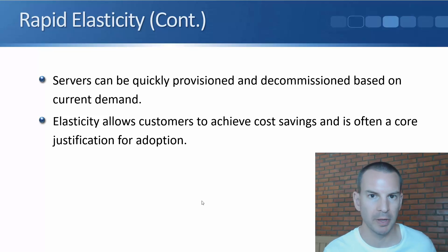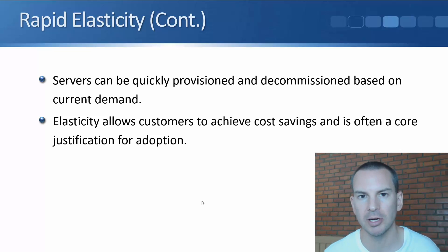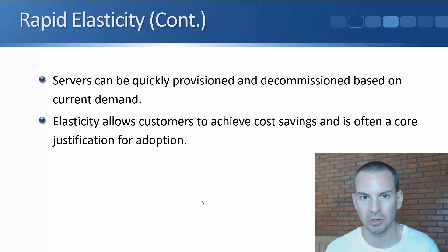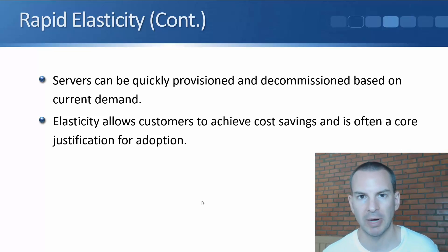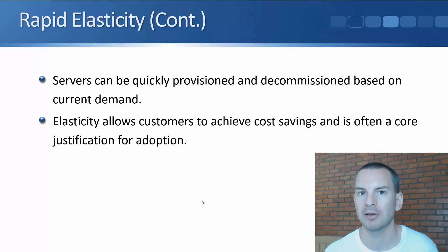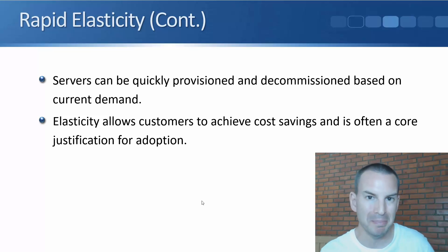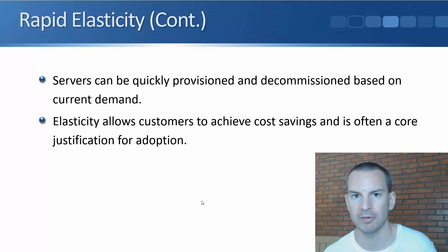We can very quickly spin up or decommission our services as and when they are required. This is what's referred to as elasticity. Think of it like a rubber band — when you need to scale out, you can do that easily, and when you need to contract back in, you can do that easily on demand as well. You only pay for the services as and when you're actually using them. So elasticity allows cloud provider customers to achieve cost savings, and this is often one of the main reasons for adoption of cloud services.